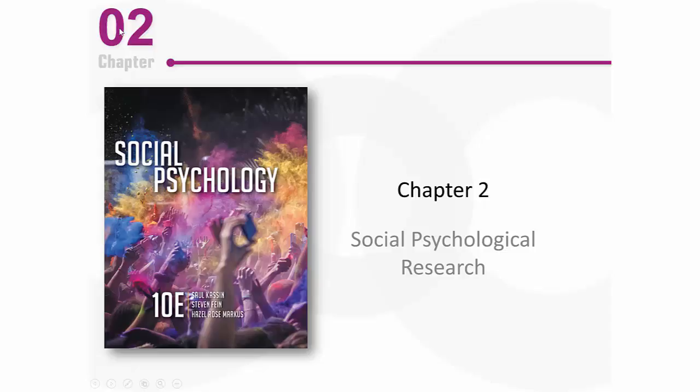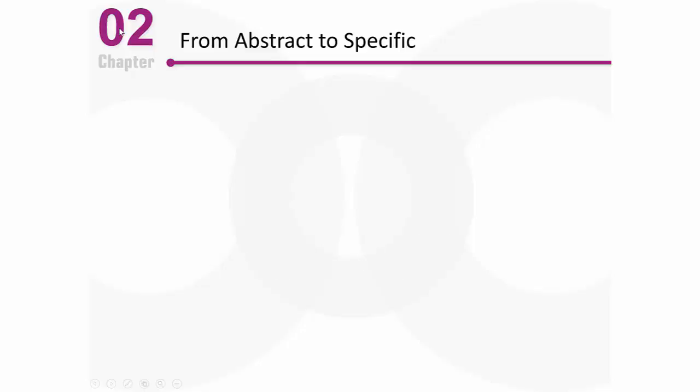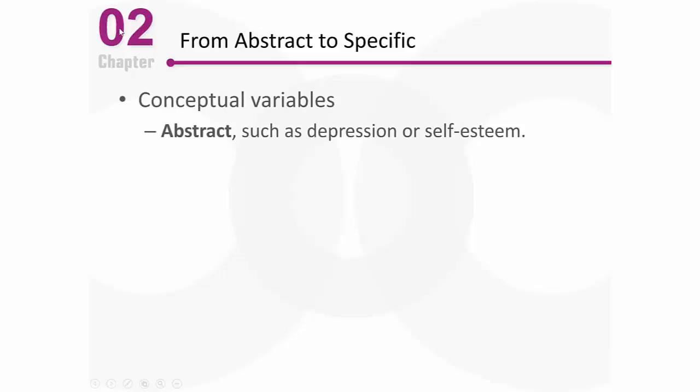All right, welcome back. Let's continue talking about social psychological research. Now let's talk about how we refine our ideas. This section primarily is talking about how we define and measure different variables. It sounds dry, but it's really very interesting. Let's first begin by talking about how we go from abstract ideas to very specific measurements.